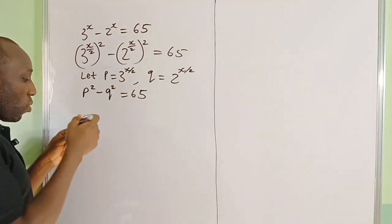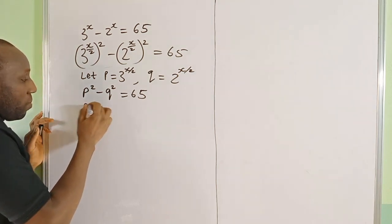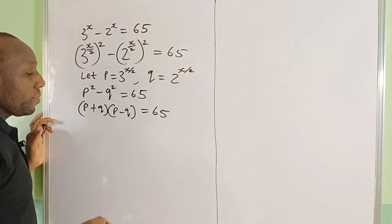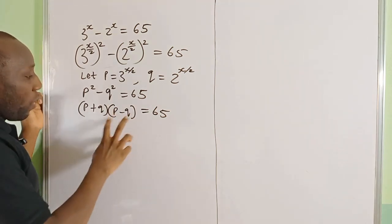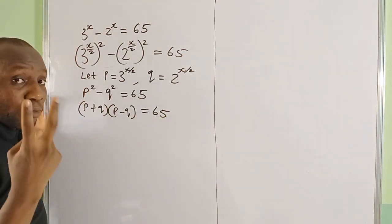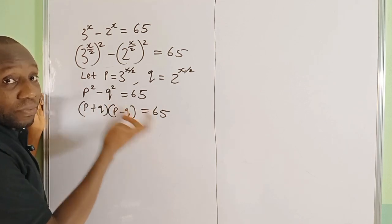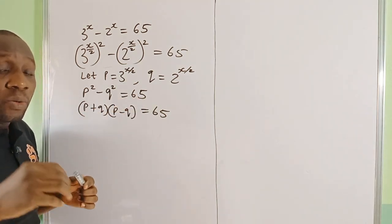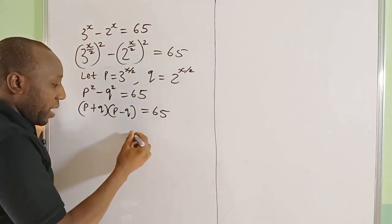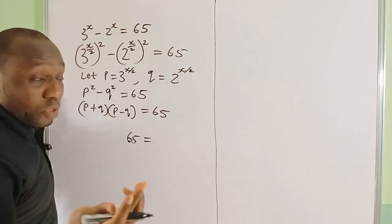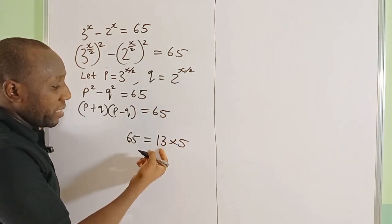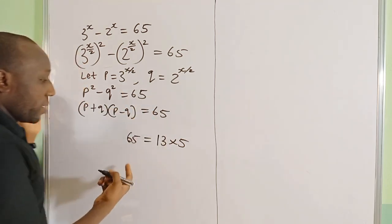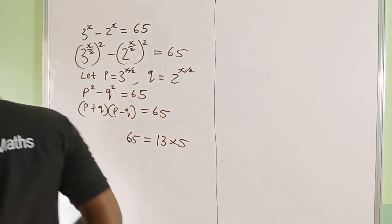Moving on, since we have p squared minus q squared, we apply the difference of two squares formula, which gives us (p + q)(p − q) = 65. Now let's do some trial and error — I want to split 65 into the product of two whole numbers. What about 13 times 5? That's 65, so we can use 13 and 5.